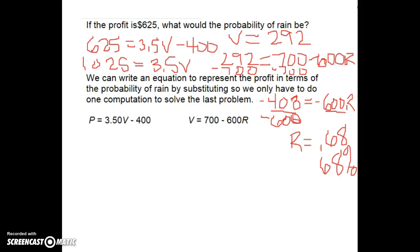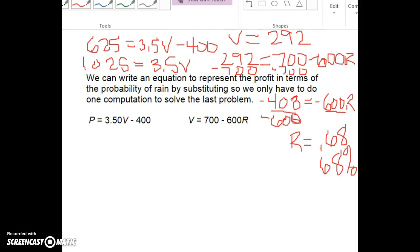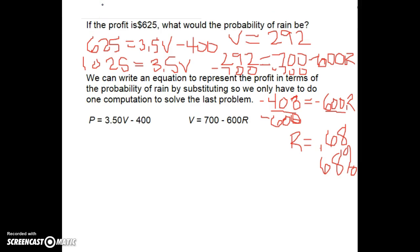So you'll notice we had to do two kind of long steps to get there. Well the beauty of substituting is that we don't need to do two separate equations. Instead we can join our equations together. I see here that both of these equations have a V, and that's the important piece. I see that V equals 700 minus 600R. So I am going to take this, and in this first equation where I see V, I'm going to substitute what I circled here.